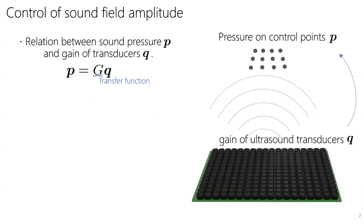The gain of the transducers and the sound pressure at the control points can be expressed by a simple matrix equation. This equation is for a free sound field.